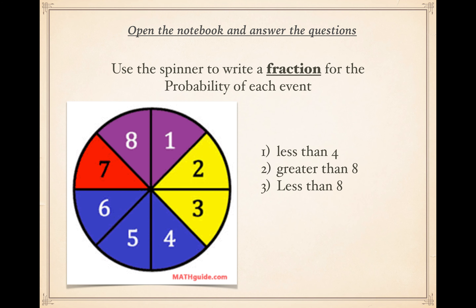Now three questions: use the spinner to write a fraction for the probability of each event. Remember, a fraction is one number written over another — one number on top, a line in the middle, another number on the bottom. First question: less than four. Second question: greater than eight. Third question: less than eight. Look at the spinner on the left and answer these questions in your notebook. You'll probably need more time, so pause and take your time.